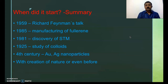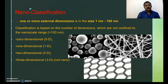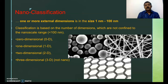As a summary of development: nanoscience started in 1959; fullerene discovery and scanning tunneling microscope followed. In 1925, colloids were discovered — they are all in nano dimensions. Nanostructures can be classified into four main groups based on the number of dimensions not confined to the nano scale, i.e., above 100 nanometers. We have zero-dimensional, one-dimensional, two-dimensional, and three-dimensional materials.